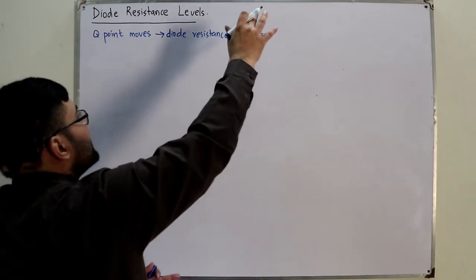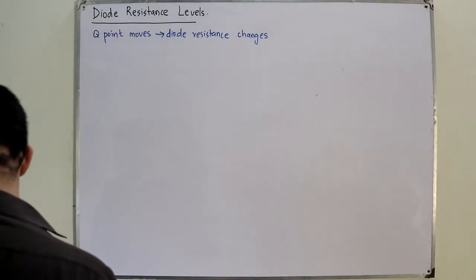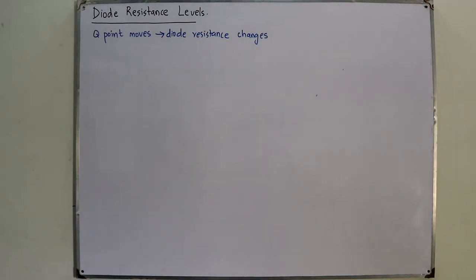The diode resistance also changes because the resistance is V upon I, that is VdQ upon IdQ, so diode resistance will also change.